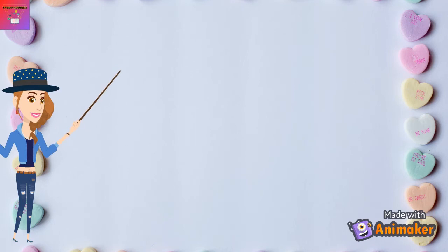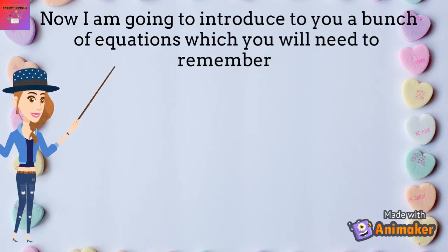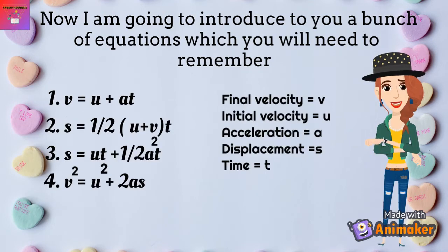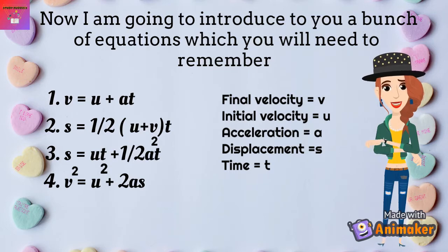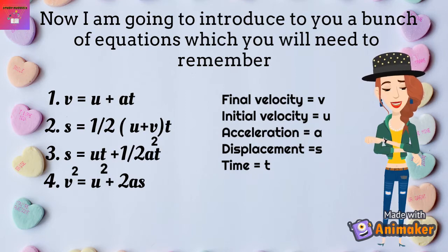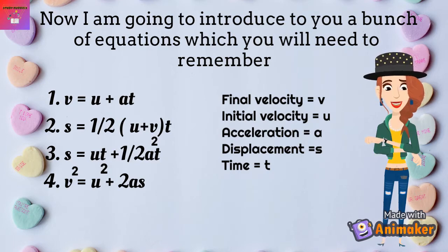Now that you've learned the variables, here are the kinematic equations. The first is v equals u plus at, where v is final velocity, u is initial velocity, a is acceleration, and t is time. The second is s equals one-half times (u plus v) times t, where s is displacement. The third is s equals ut plus one-half at squared. And the fourth is v squared equals u squared plus 2as. Choose which equation to use based on the information given in the question.